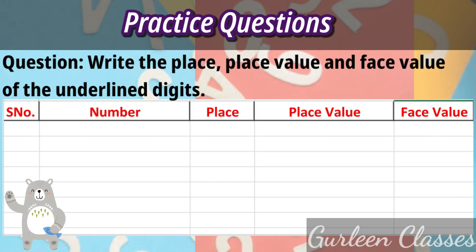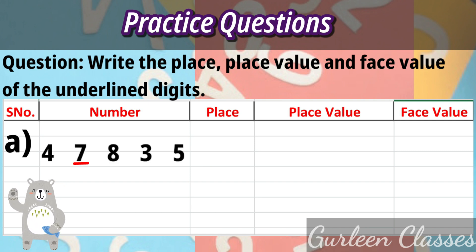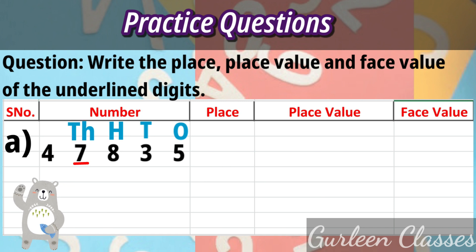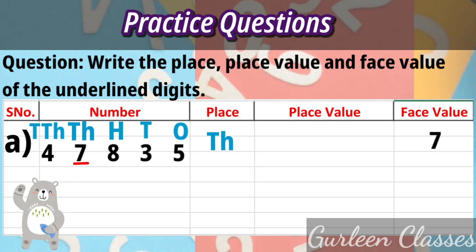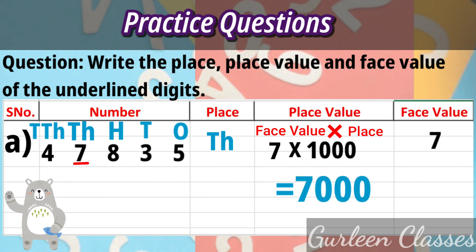Now let's do some practice questions. Question: write the place, place value, and face value of the underlined digits. The place positions shown are: ones, tens, hundreds, thousands, ten-thousands. We have to find the place, place value, and face value of the underlined digit, which is 7. The place is thousands. The face value is the actual value of the digit, so face value is 7. Place value equals face value multiplied by place — 7 into 1000 equals 7000.